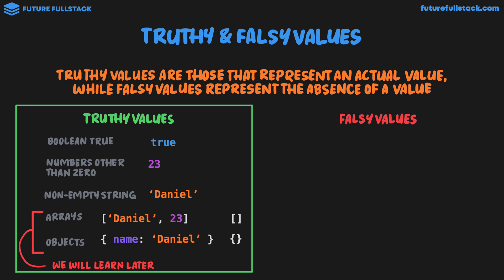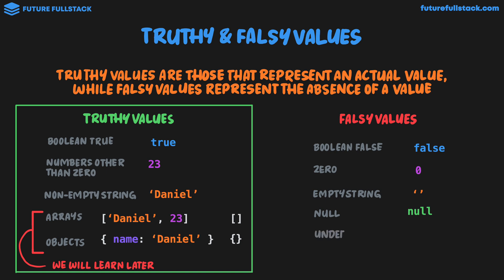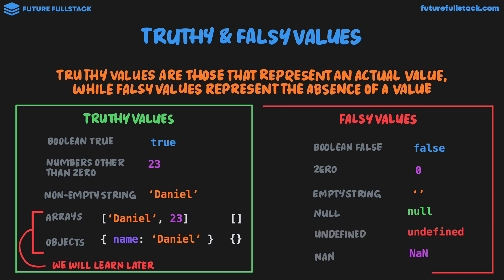For falsy values, we have boolean false, we have the number zero, we have an empty string, we have null, we have undefined, and we have not a number — NaN. So these are our falsy values.